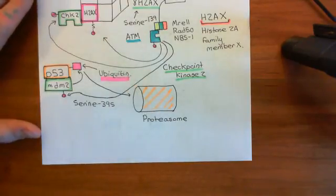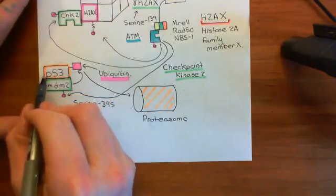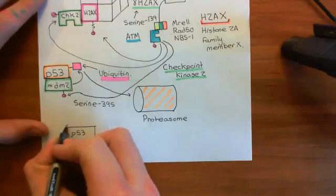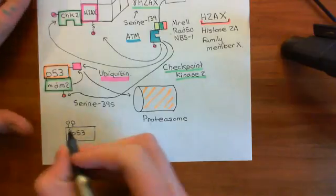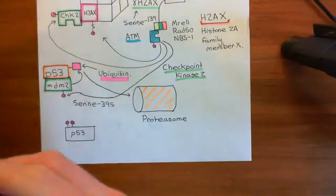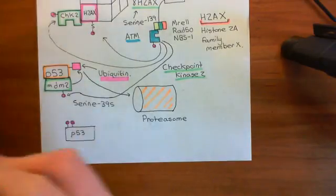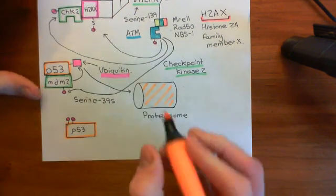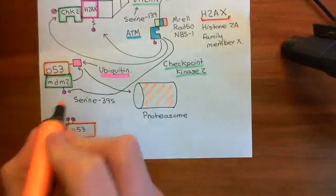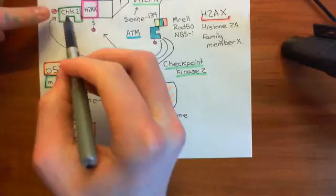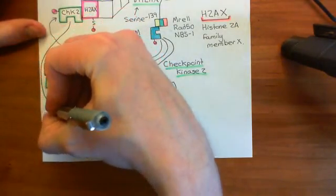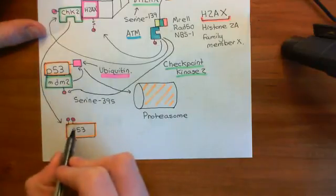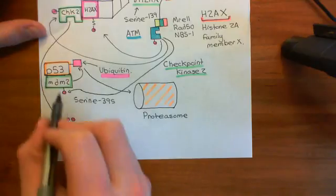In addition, checkpoint kinase 2 is going to do something as well — it is going to phosphorylate multiple serines very close to the amino terminus of P53. These phosphorylations produced by checkpoint kinase 2 protect P53 from any MDM2 that has not been phosphorylated by ATM, because ATM is not reasonably going to be able to take out every single MDM2 molecule. The phosphorylations on P53 stop MDM2 from being able to bind to it, so they protect P53 from MDM2.